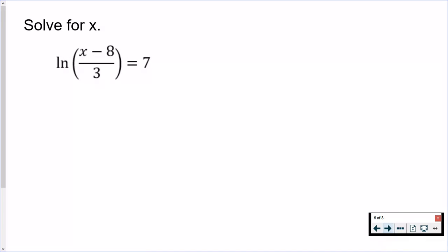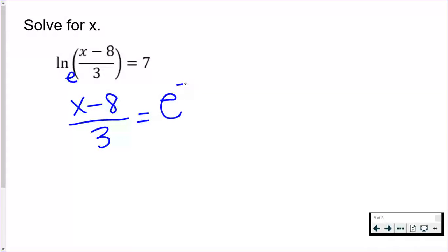Now I'm going to do another example. Again, once you convert this to exponential it just becomes an algebraic equation that you're solving. The base is e again, and the natural log is already by itself. If it wasn't, I would move everything around until it was. So we've got e to the seventh on the other side.